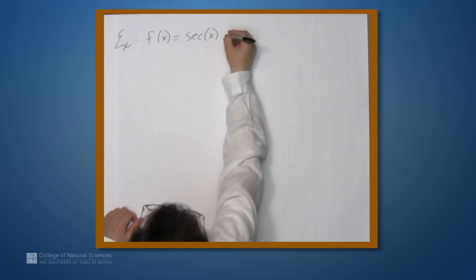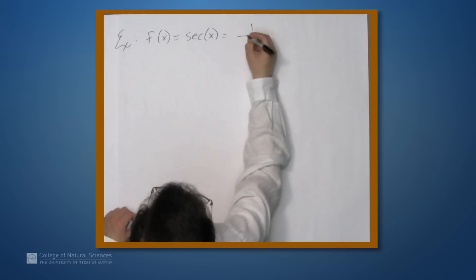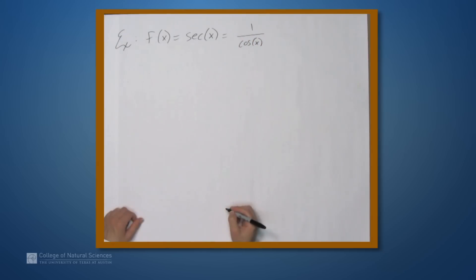So secant of x is 1 over cosine x. So once again, we can use the quotient rule, combine with the derivative of cosine.